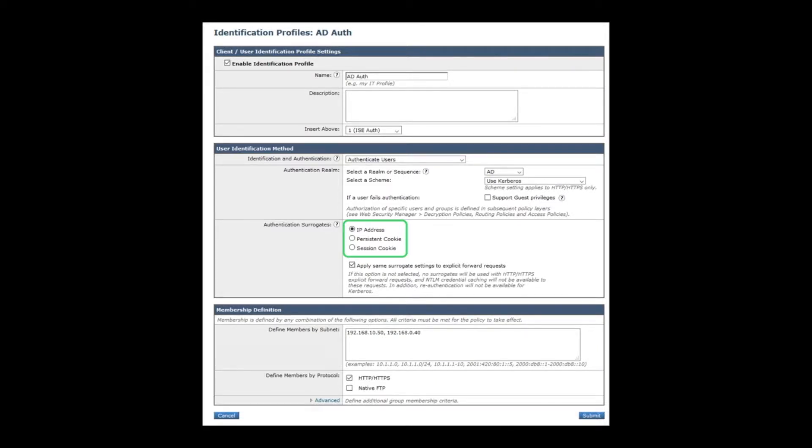Note that the selected surrogate by default only applies to transparent proxy connections. In order to use the surrogate settings for explicit requests, check the box for Apply Same Surrogate Settings to Explicit Forward Requests.